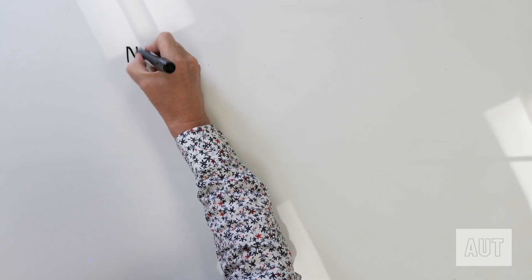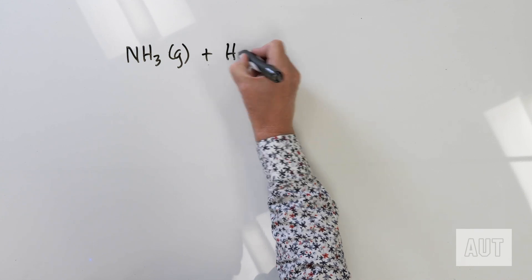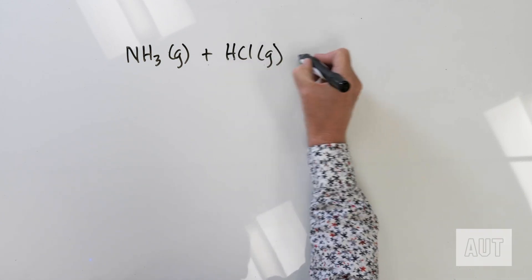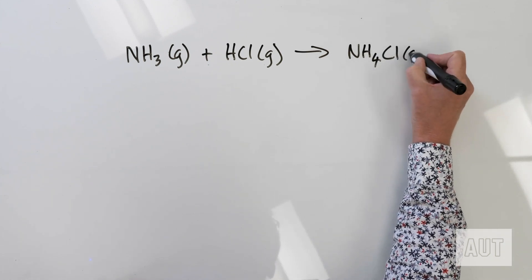What you will see in textbooks and on the web are tables of values of standard enthalpies of formation of pretty much every possible compound you can imagine. We're going to use those data today to calculate the standard enthalpy change for a particular reaction — gaseous ammonia plus gaseous HCl reacting to give solid ammonium chloride.